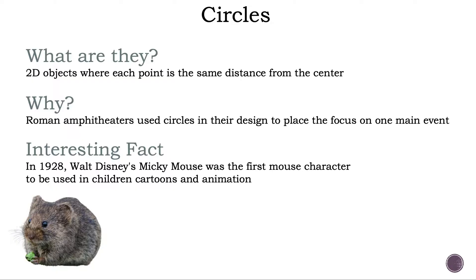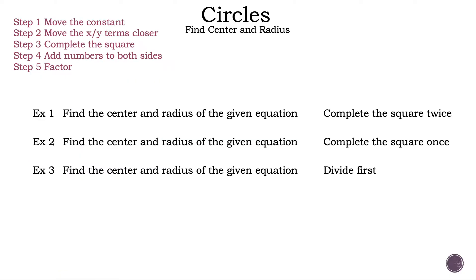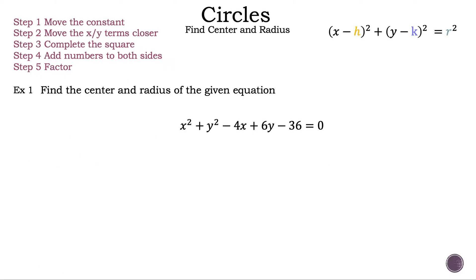Now let's take a look at the examples we're going to be discussing in today's video. Let's take a closer look at example one and read the steps. Step one: move the constant. Step two: move the xy terms closer. Step three: complete the square. Step four: add numbers to both sides. Step five: factor.